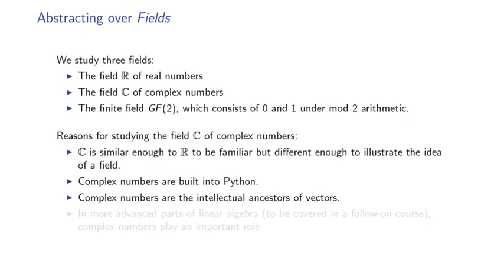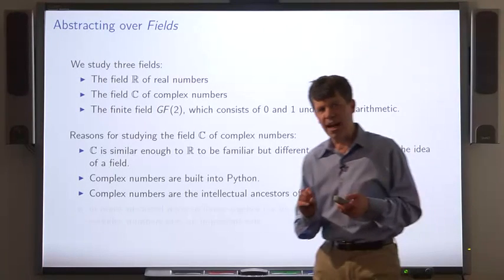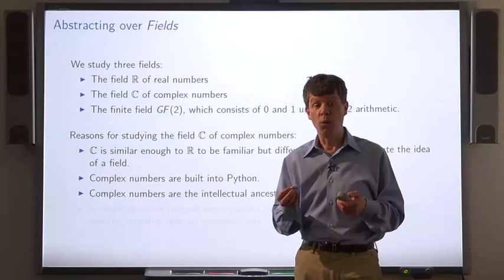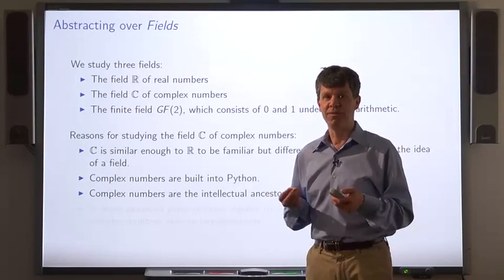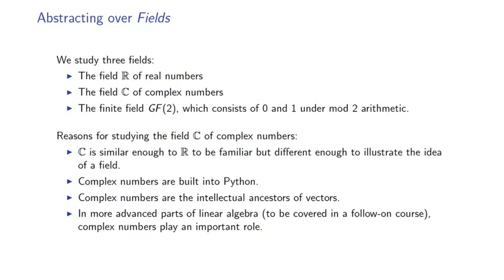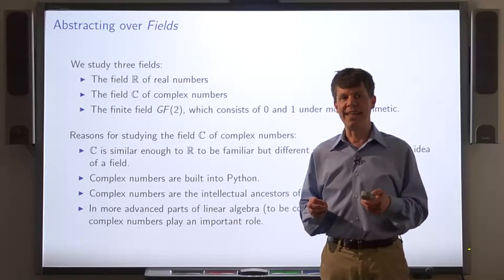Now, another reason that complex numbers are convenient is that they're built right into Python. Also, complex numbers are, in some sense, the intellectual ancestors of vectors. So some of the basic operations that we can do with complex numbers, we'll later learn how to do in higher dimension with vectors. And finally, in more advanced parts of linear algebra, complex numbers are essential.